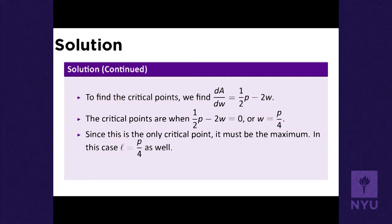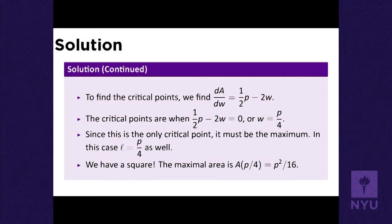This is the only critical point, and it must be the maximum because the function is 0 at the endpoints. When you plug in A(P/4), the length also becomes P/4. The area is length times width, so P/4 times P/4 = P²/16. Since length and width are both P/4 — equal — this rectangle is a square. We've shown that if the perimeter of a rectangle is fixed, the largest the area can be is the area of a square using that same perimeter.